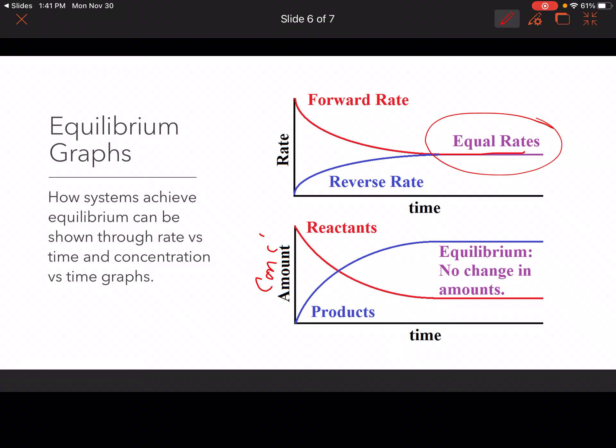We could also look at it in terms of amounts. This would be concentration here. So concentration versus time. So if you look, your reactant starts high, this is the red, and then it comes down and then eventually it stabilizes. So there's no change in the amount.